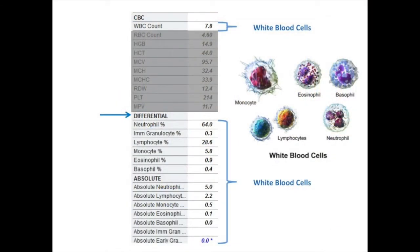There are different kinds of white blood cells that respond to different kinds of infection and inflammation. These subtypes of white blood cells are reported in the differential. The differential is a percentage of each type of white blood cell circulating and can indicate to your doctor what type of infection or inflammation your body is fighting.